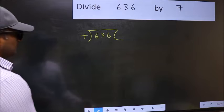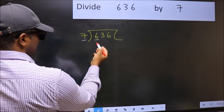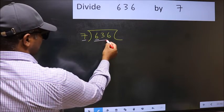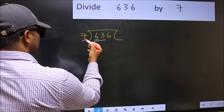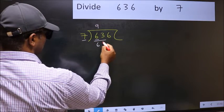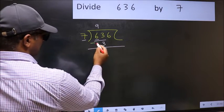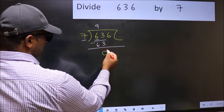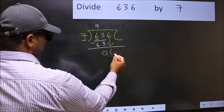Next, here we have 6 and here 7. 6 is smaller than 7, so we should take two numbers, 63. When do we get 63 in 7 table? 7 nines 63. Now you should subtract. 63 minus 63, 0. After this bring down the beside number. So 6 down.